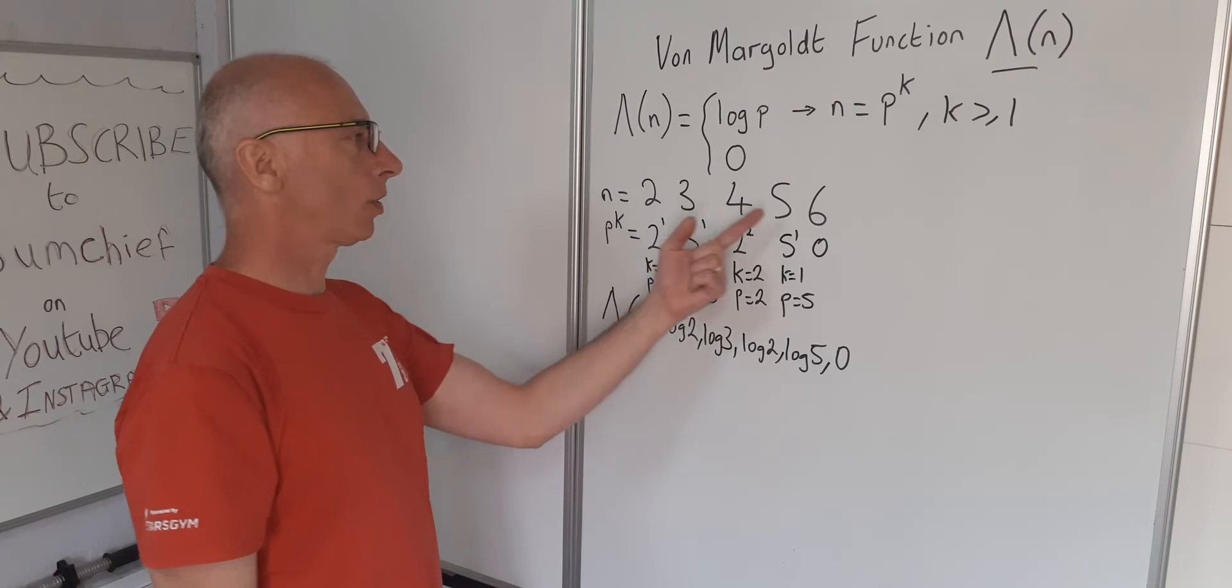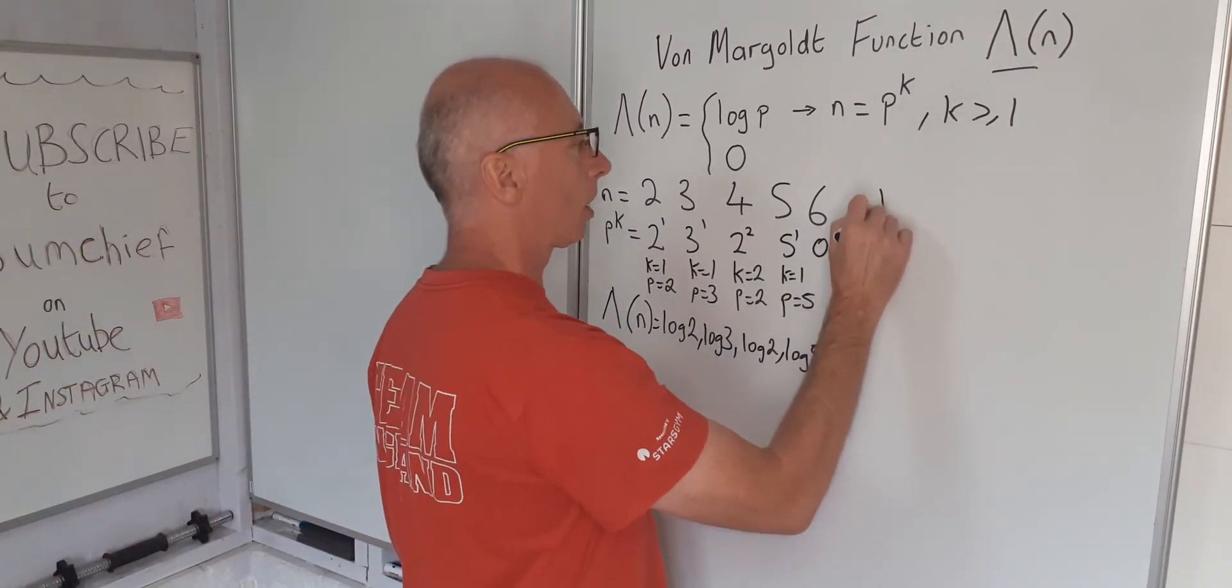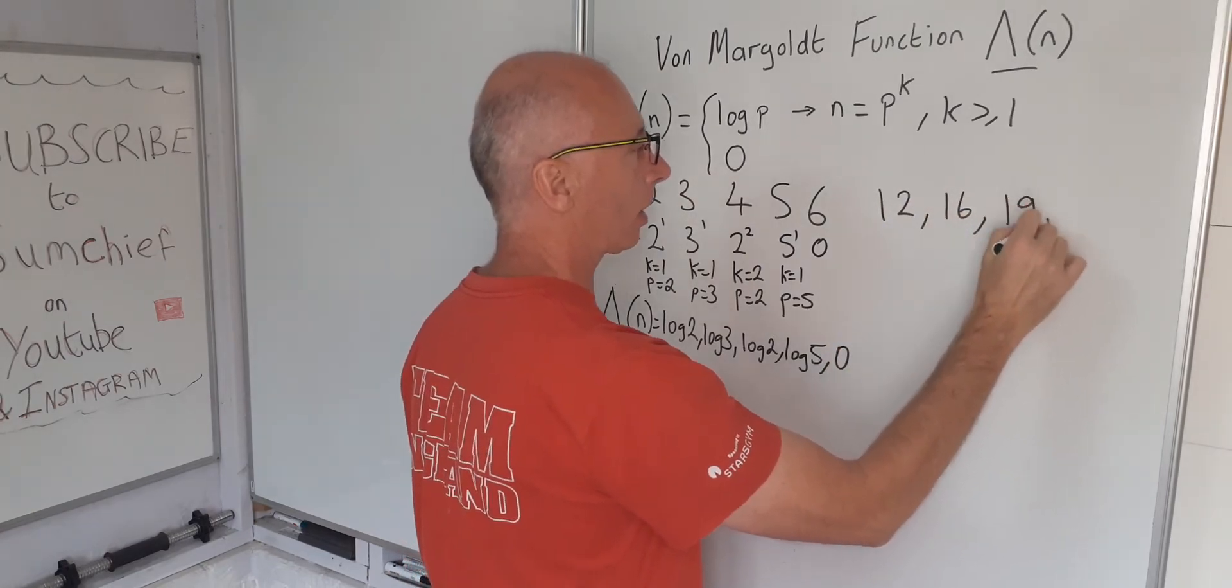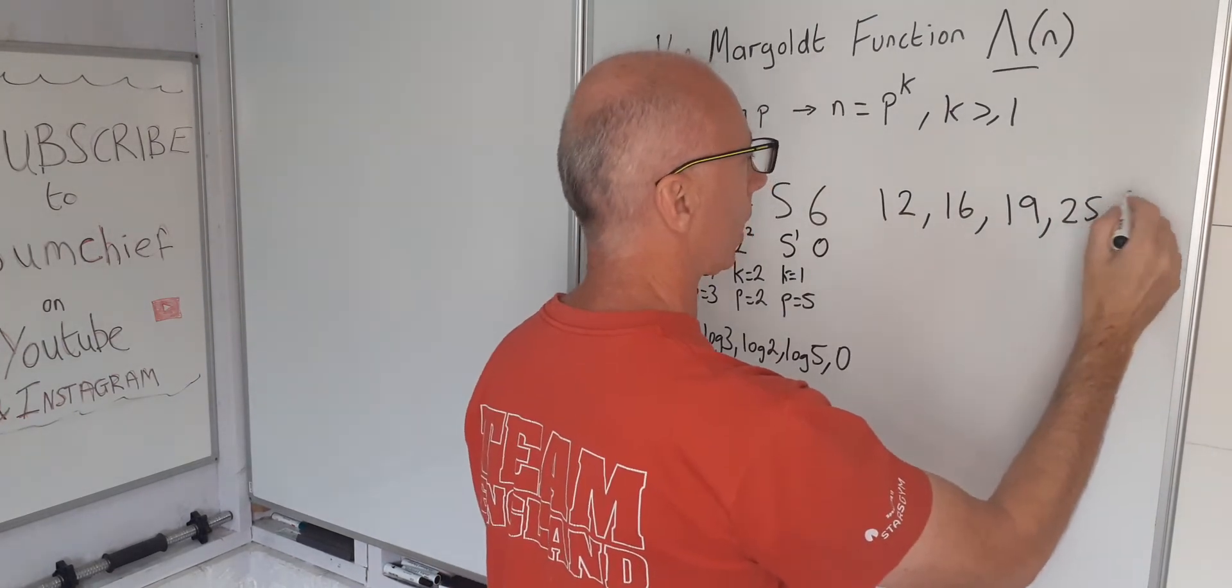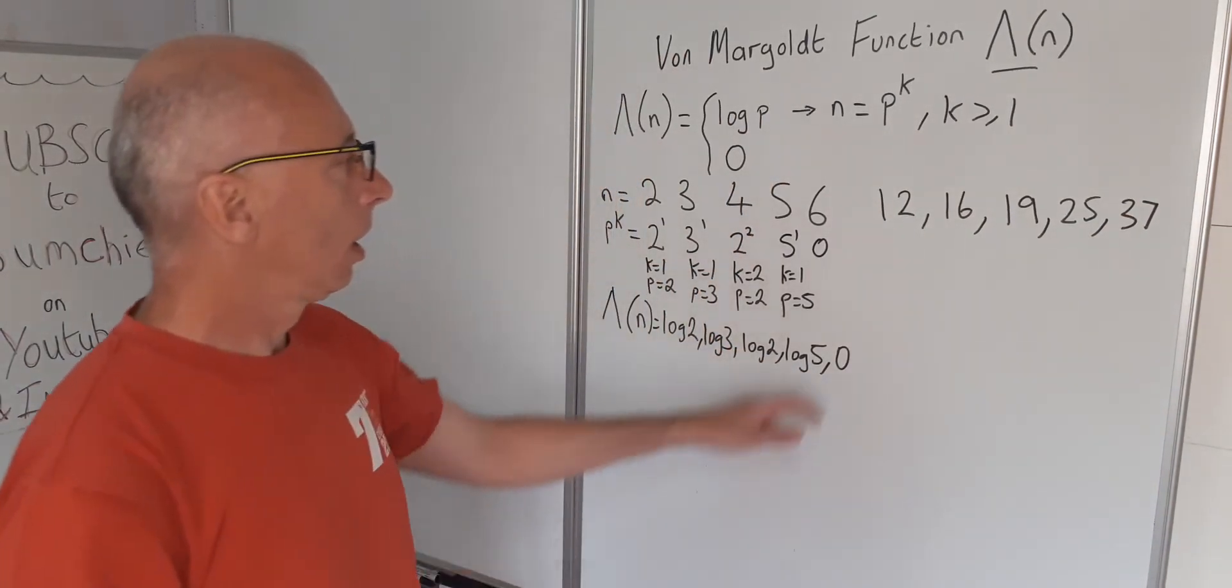So there we go for two, three, four, five, six. Let's try some other numbers. So let's try twelve, sixteen, nineteen, twenty-five, and let's try thirty-seven. Okay.